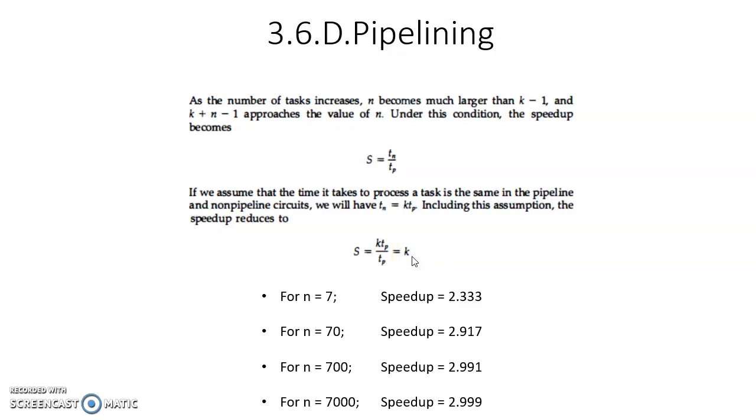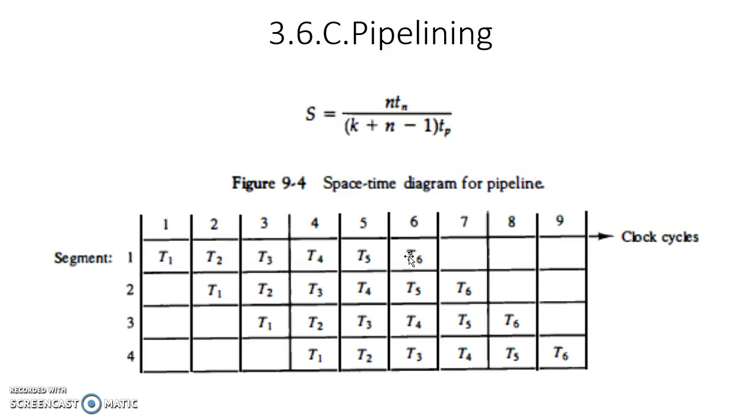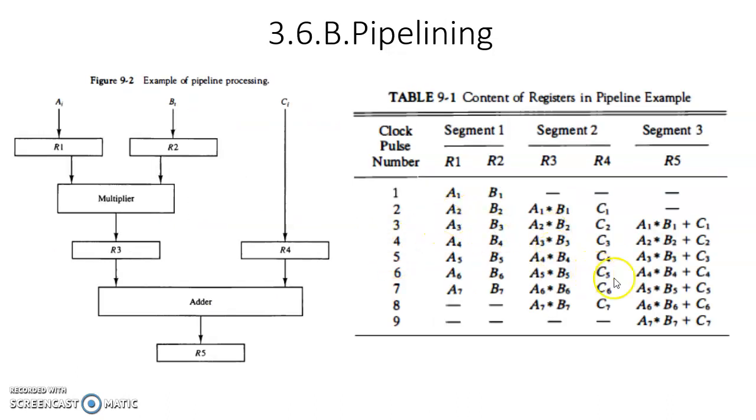So in this example, k is 3. That means you can obtain three times faster execution of the same sequential process. This is the advantage of pipelining.